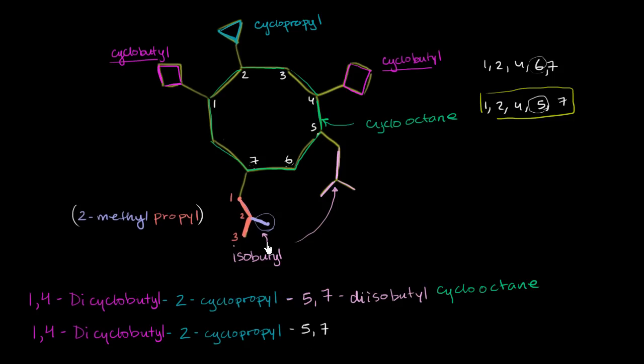But when we're doing systematic naming, we won't say die this thing. Instead, we say bis. So 5,7 bis, that says that, hey, we've got two of what I'm about to say, bis this thing.